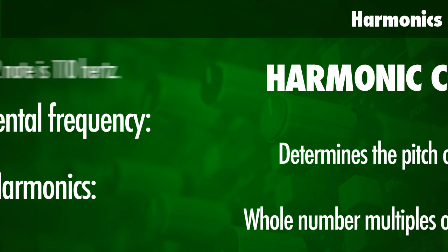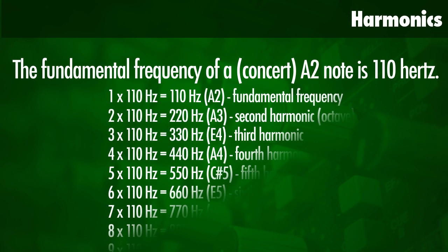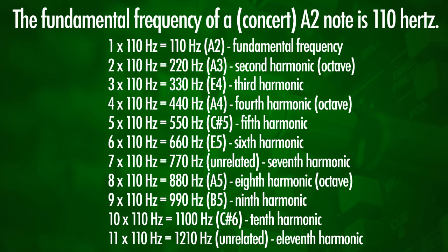The fundamental frequency of an A2 note is 110 Hz. The harmonics would then be at 220, which is the second harmonic and exactly an octave up. Then we've got 330, which happens to be an A4 note — that is the third harmonic. The fourth harmonic is again an octave higher. A doubling in frequency represents an octave.